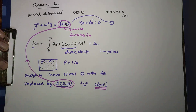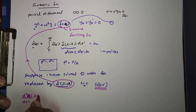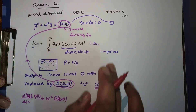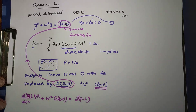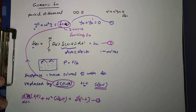We can now write: d squared g by dt squared plus omega squared g of t, t prime is equal to delta of t prime minus t. This is equation number 3. So g of t, t prime satisfies the original differential operator applied to g equals the Dirac delta function.